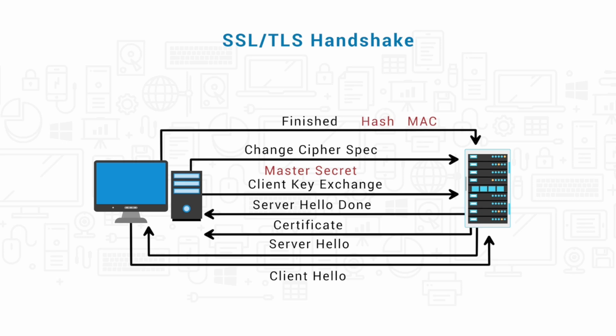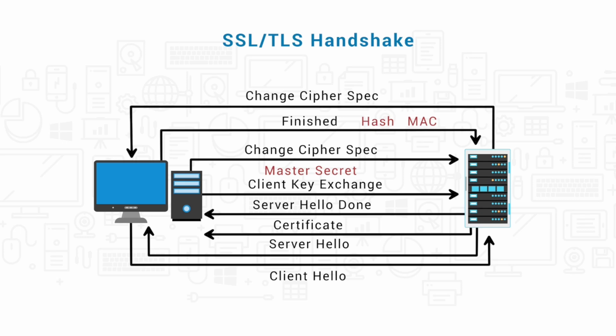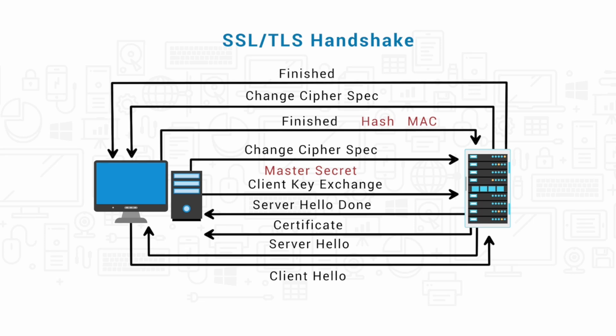But if the server is able to decrypt the message and verify the hash and MAC, it responds to the client with a change cipher spec message, saying: everything coming from me will now be encrypted. The server then sends a finished message which, just like the client's finished message, also contains a hash and MAC. If they pass verification, the SSL or TLS handshake is considered to be complete.